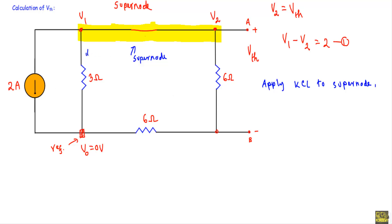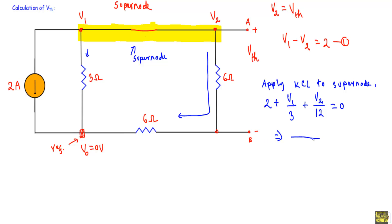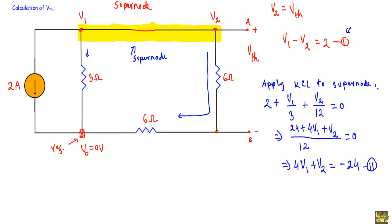After that I will replace the voltage source with a short circuit and apply KCL at the super node. The 2 ampere current source is outgoing. The same current flows through the 6 ohm and 6 ohm resistors, so that branch has a combined resistance of 12 ohm. Applying KCL at the super node: 2 + v1/3 + v2/12 = 0. Taking the LCM: 24 + 4v1 + v2 = 0, so 4v1 + v2 = −24 — this is equation number two.